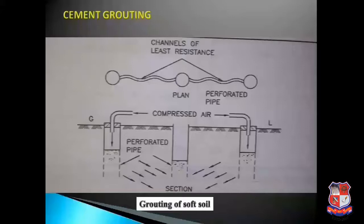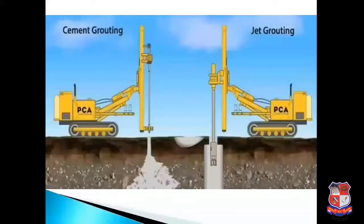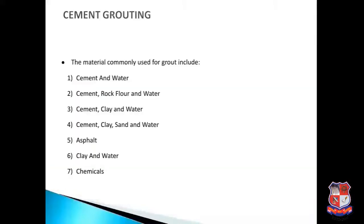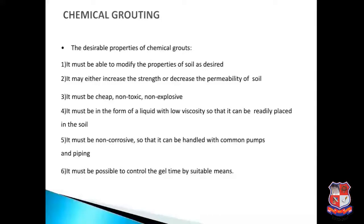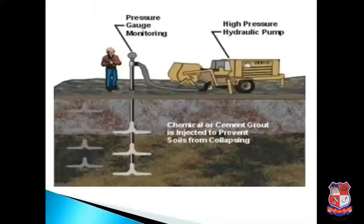Cement grouting materials commonly used include: cement and water, cement rock and water, cement clay and water, cement clay sand and water, and asphalt clay and water. For chemical grouting, the grout must be able to modify soil properties as desired — either increasing strength or decreasing permeability. It must be cheap, non-toxic, non-explosive, in liquid form with low viscosity for easy placement, and non-corrosive so it can be handled with common pumps and piping. Gel time must be controllable. Chemical grout is inserted using a high-pressure hydraulic pump with a monitored pressure gauge.